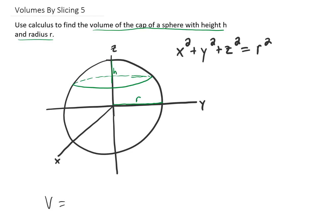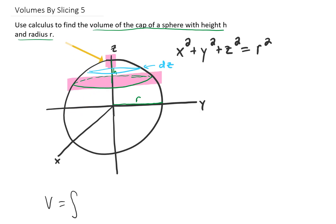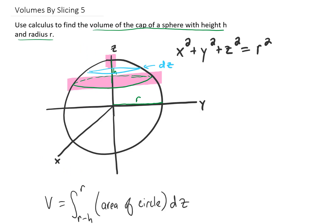Let's see if we can set up the basic integral. We're going to slice this sphere into pieces. Each one of those pieces is going to be a circle, or a disk, with a thickness of dz, and we're going to add up all of the volumes of those little disks. The largest value of z in this region is r, and the smallest value of z is r minus h. So our limits on z will go from r minus h to r, and we'll be integrating the areas of all those circles with respect to z.